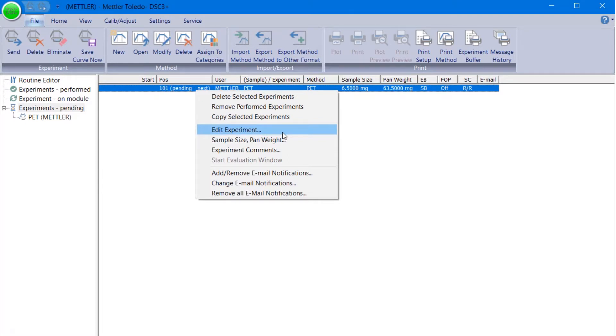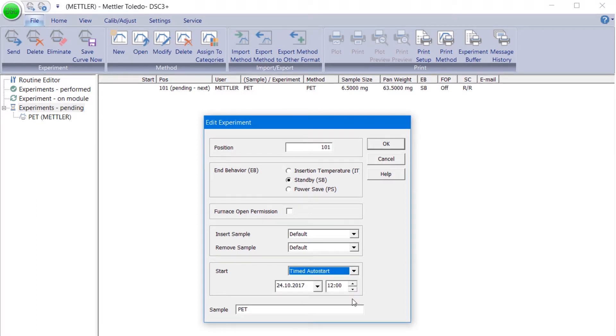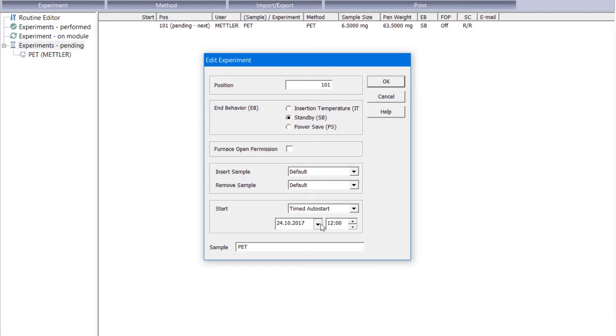Next, open Edit Experiment and select the Timed Auto Start option in the START box. Timed Auto Start allows you to schedule the start date and time. Simply use the arrow buttons to open the calendar and choose your preferred date and time.